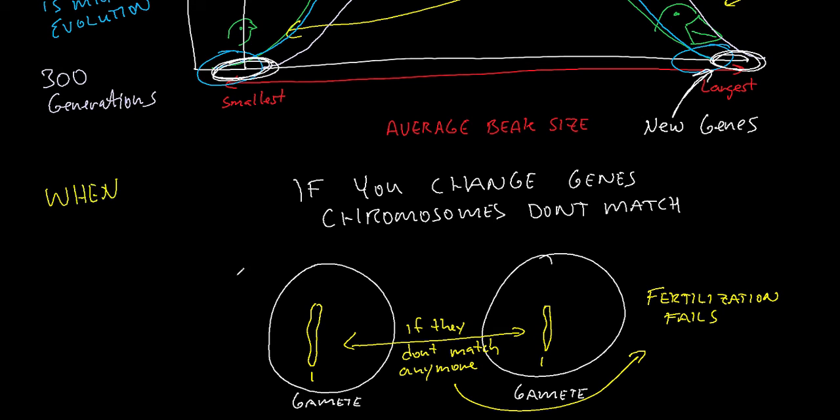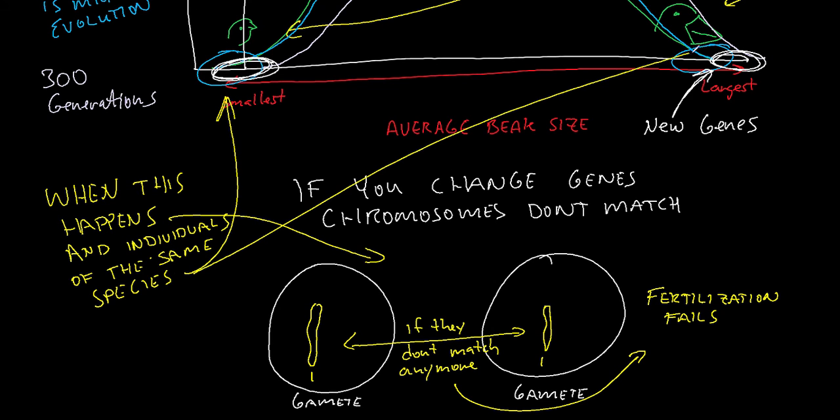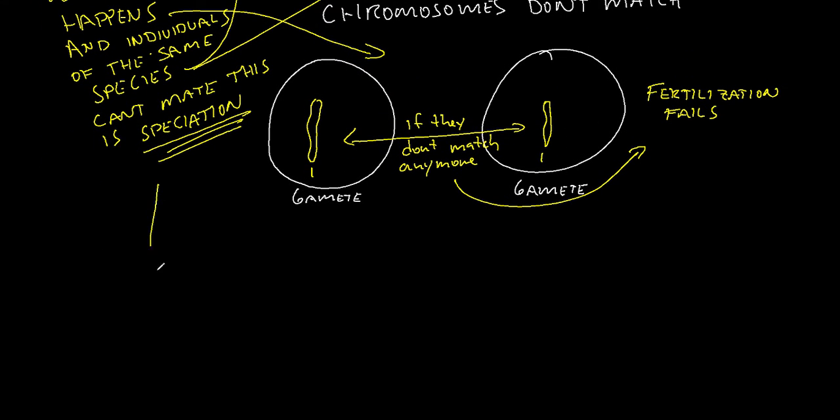So this is what happens here, that now you have some of the birds at the far end of one extreme can no longer mate with the far end of the other extreme. When that occurs, and it's not an instantaneous thing, it's a gradual thing, but when that occurs, we call this speciation. And that means those organisms, those individuals, can no longer mate with each other. They are now a different species.